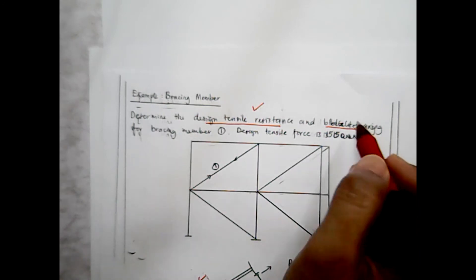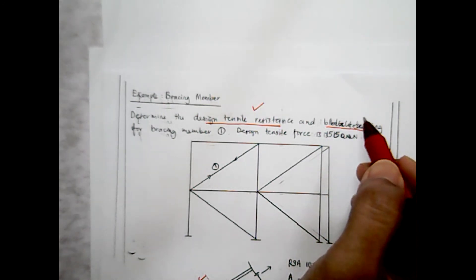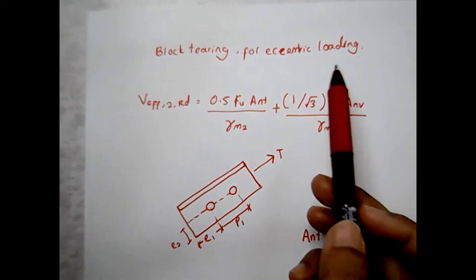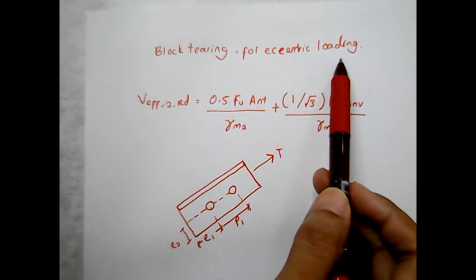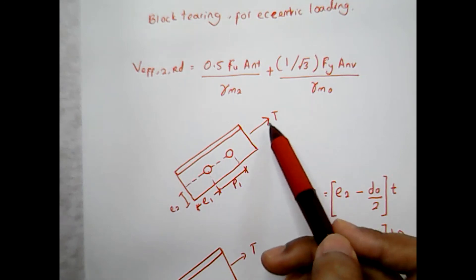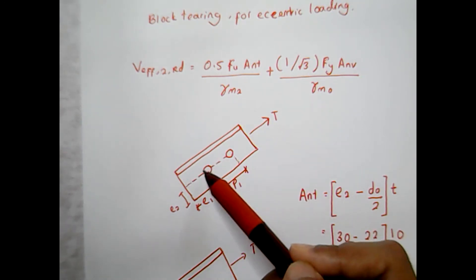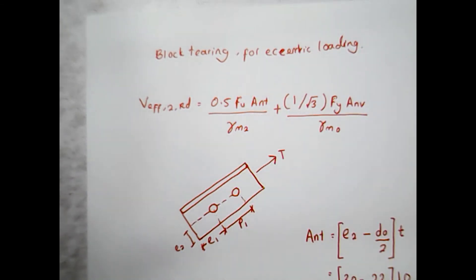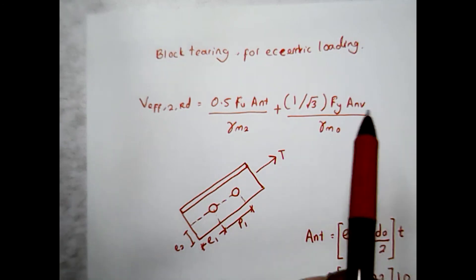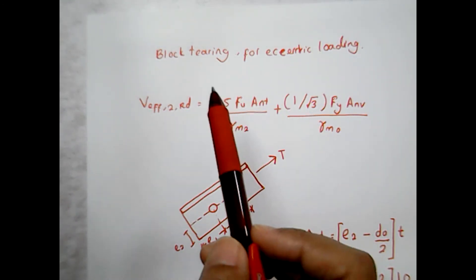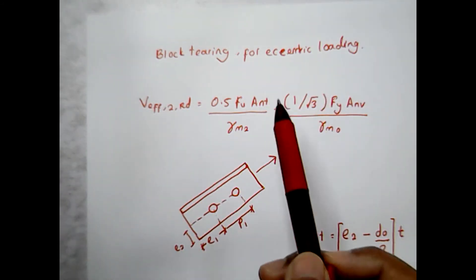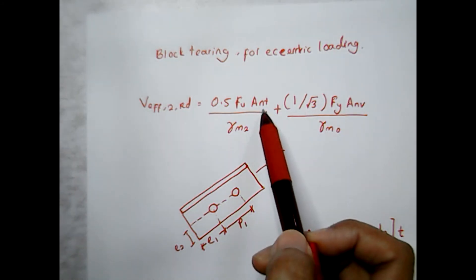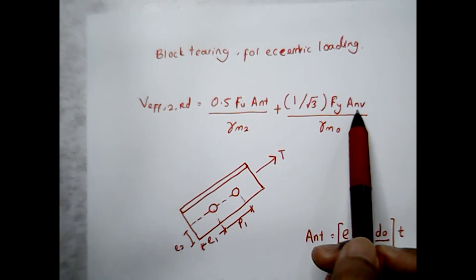Now let's calculate block tearing. Block tearing falls under eccentric loading because the line of tension forces does not coincide with the centroid of the cross-sectional area. For eccentric loading, the equations give us parameters ANT and ANV, where ANT is the net area in tension and ANV is the net area in shear.